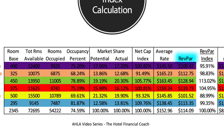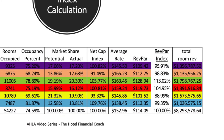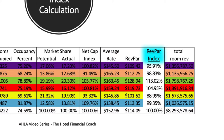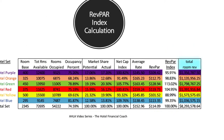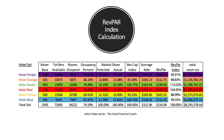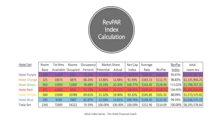From there, we can calculate the REVPAR index by simply dividing the total room revenue for your hotel — or any hotel — by the total room revenue for the competitive set. That's how we calculate REVPAR index.